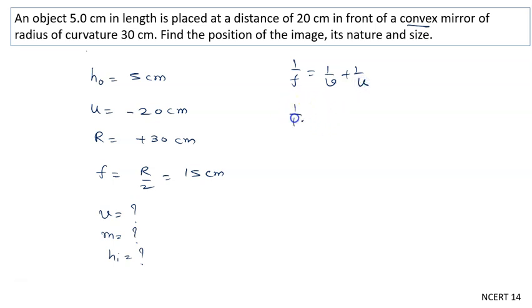So 1/f is 1/15, v we have to calculate, and u is -20, so it is -1/20. 1/v can be written as 1/15. The 1/20 will come to this side and negative will become positive, so it is +1/20.